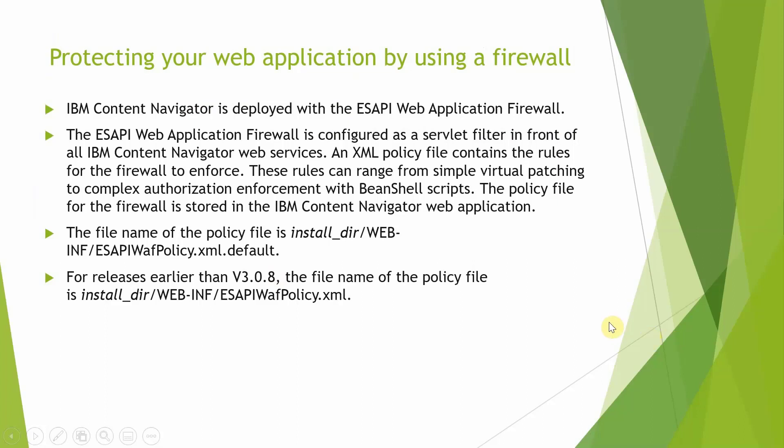In IBM Content Navigator, it is deployed with the ES API web application firewall. The web application firewall is configured as a filter in front of all IBM Content Navigator web services. An XML policy file contains the rules for the firewall to enforce. These rules can range from simple virtual patching to complex authorization enforcement. The policy file for the firewall is stored in the IBM Content Navigator web application.